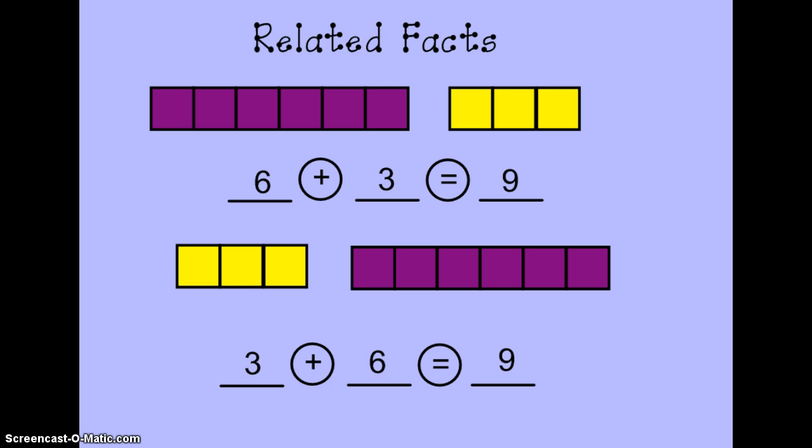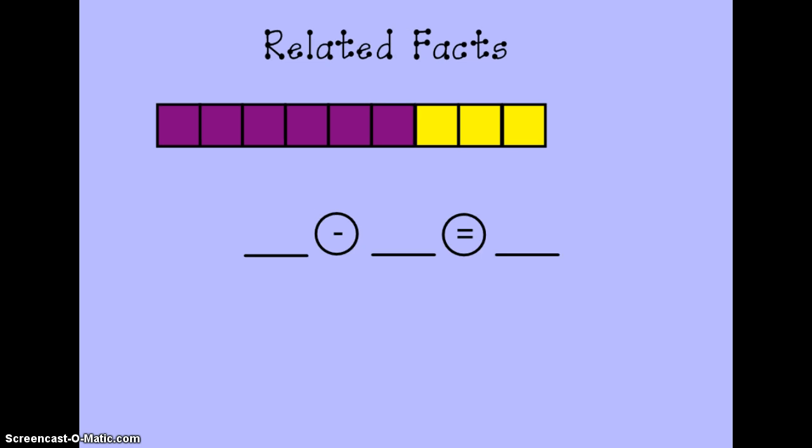Now let's move on to subtraction. If I use the same set of cubes to make a subtraction fact I would start with my nine first because that's my biggest number. If I took away three cubes I would write minus three and I would have six cubes remaining to represent my six purple cubes that are still there.